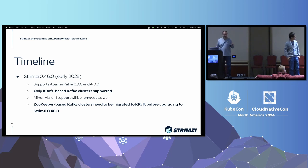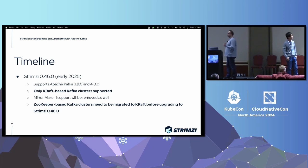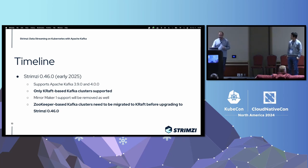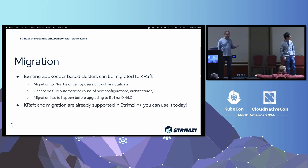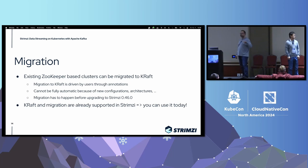Kafka 4.0, being a new major version, will bring other changes as well — for example, MirrorMaker 1 will be removed, and on the client side it will drop support for Java 8 and likely Java 11 as well. If you have existing ZooKeeper-based clusters, they won't be left behind — there is a migration process you can use to migrate from ZooKeeper to KRaft.